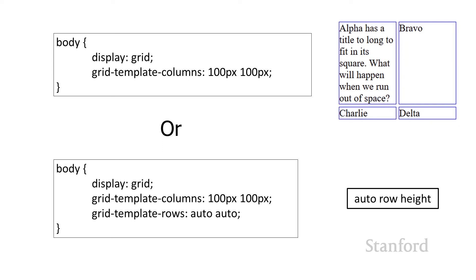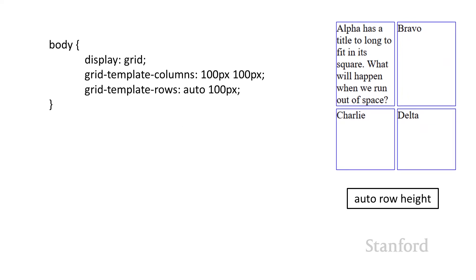Alternatively, you can explicitly mark the rows as auto. The default behavior is auto — short for automatic — which provides as much space as needed. You might want to use auto explicitly if you have a mix: some rows set to auto and some with fixed sizes. In this case, I want the first row to be auto but the second row set to 100 pixels.